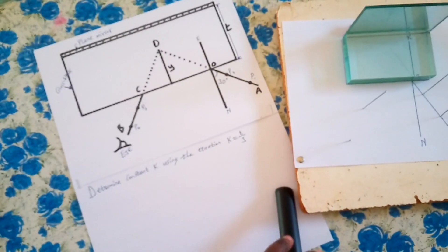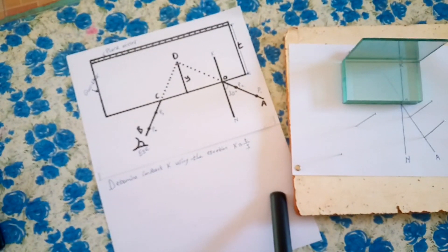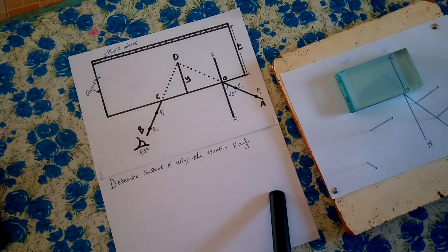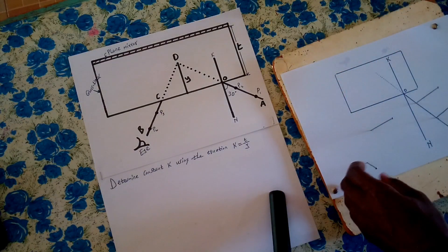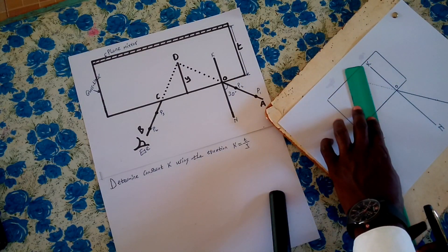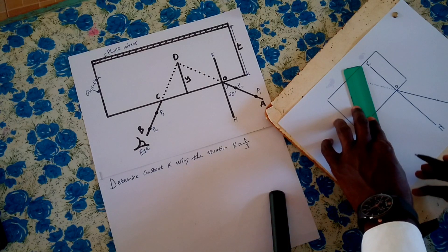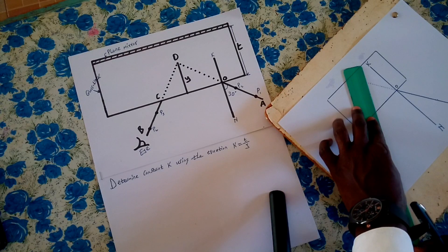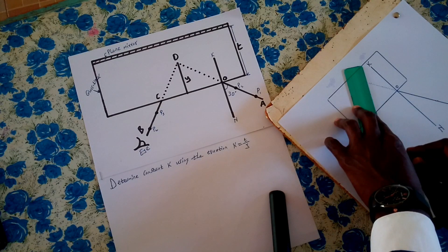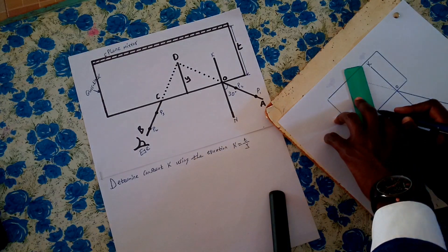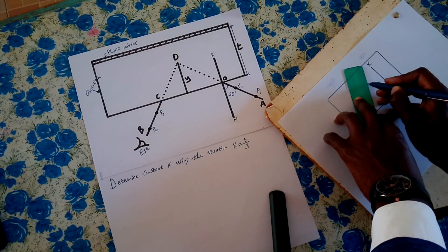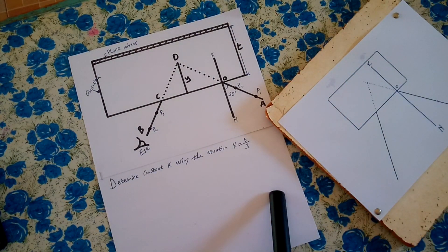Let's go back to the setup now. We remove the system — we remove these pins. Then we join the two holes with a straight line. We join the two holes with a straight line, and then we can prolong it with a dotted line. We now have the new line.